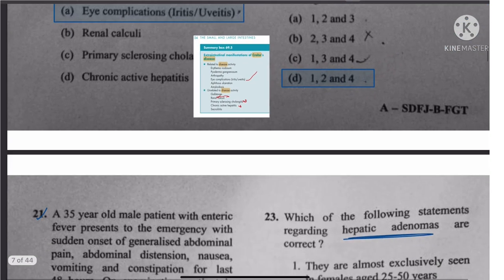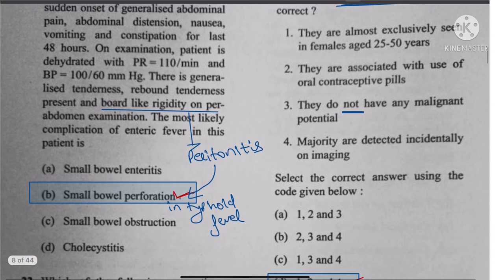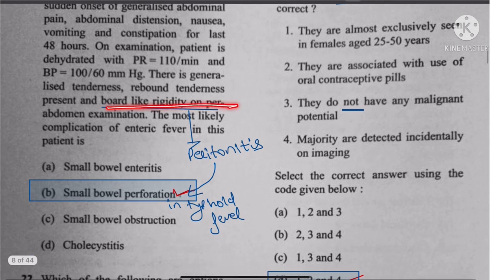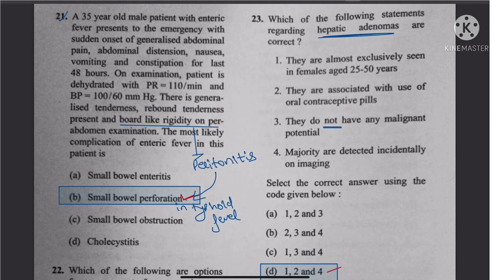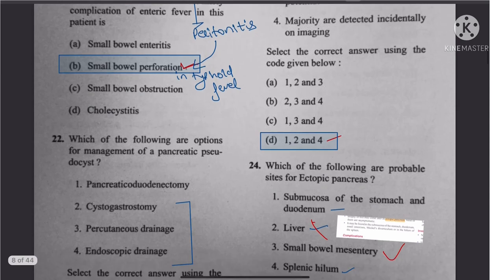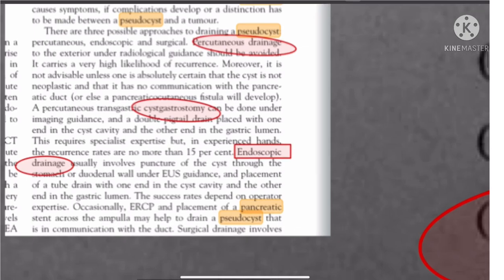Question 21: Boat-like rigidity on per-abdominal examination indicates peritonitis. In typhoid fever this corresponds to small bowel perforation. The answer is small bowel perforation.